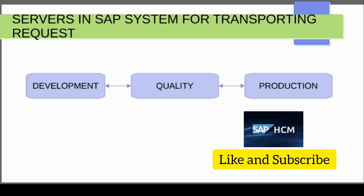Servers means logins, so there are three logins. You can login to development, quality, and production. What we do in the development server is we create configurations, make changes, and these are saved in the transport request. This TR will then be transferred to quality and then to production.